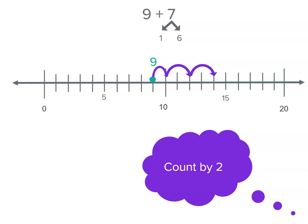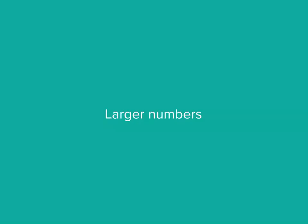Counting by two: two, four, six — and you can see we end up one past fifteen, which is sixteen. So nine plus seven equals sixteen. What about larger numbers?